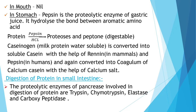Digestion of protein in the mouth is almost nil. In the stomach, pepsin is the proteolytic enzyme of gastric juice; it hydrolyzes the bond between aromatic amino acids. Protein is converted to proteoses and peptones with the help of pepsin and HCl. Caseinogen, a milk protein that is water insoluble, is converted into soluble casein with the help of rennin in mammals and pepsin in humans, then converted into coagulum of calcium caseinate with the help of calcium salts.